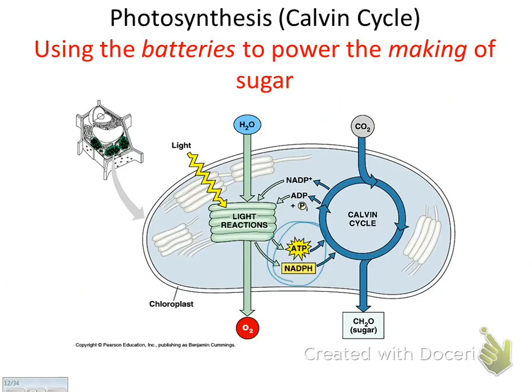The formula: CO2 plus water in the presence of sunlight makes sugar and oxygen. Sugar is stored chemical energy for cellular respiration — sugar is stored energy. The water splits, and that's where the oxygen comes from. The oxygen that's released comes from the water, not from the CO2.